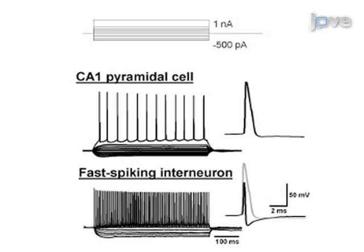Using current clamp mode, identify fast spiking interneurons by their response to a family of hyperpolarizing to depolarizing current pulses.